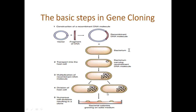Numerous cell copies of the gene are achieved. These are the basic five steps of gene cloning. We will discuss all these steps, vectors, and the host cells involved in further detail in upcoming videos.